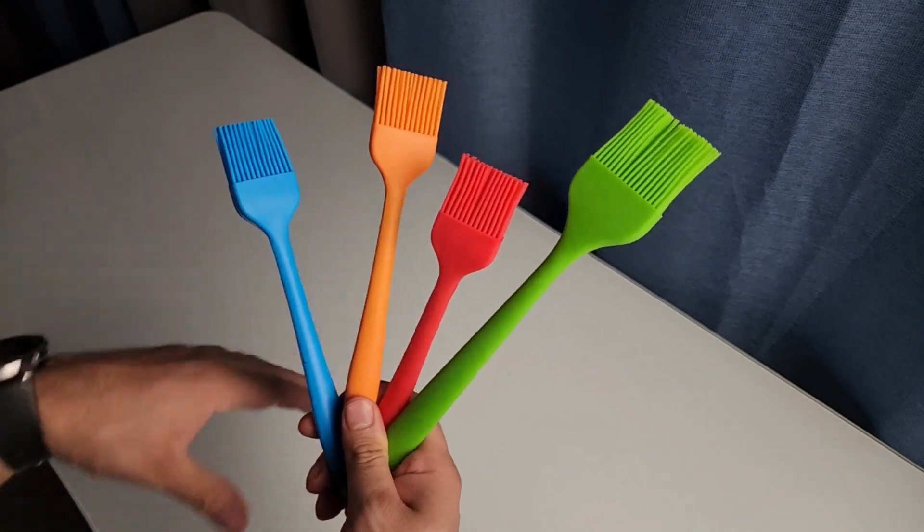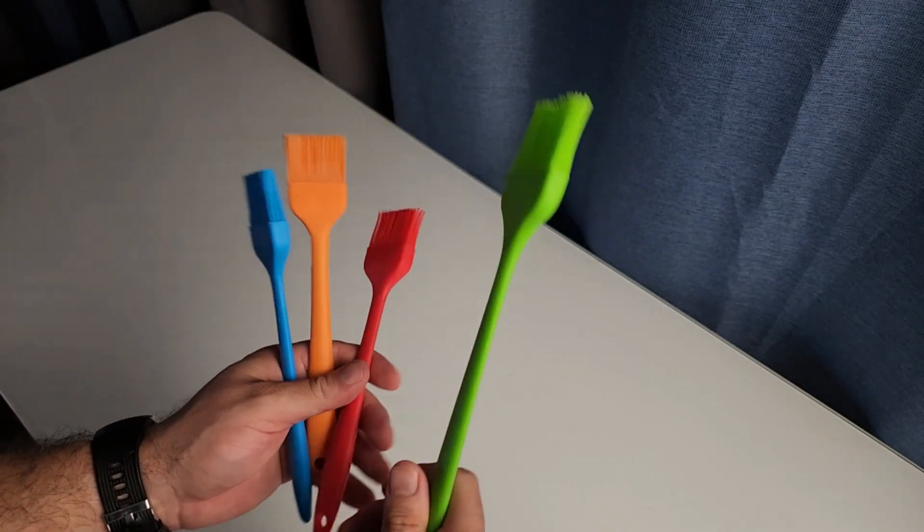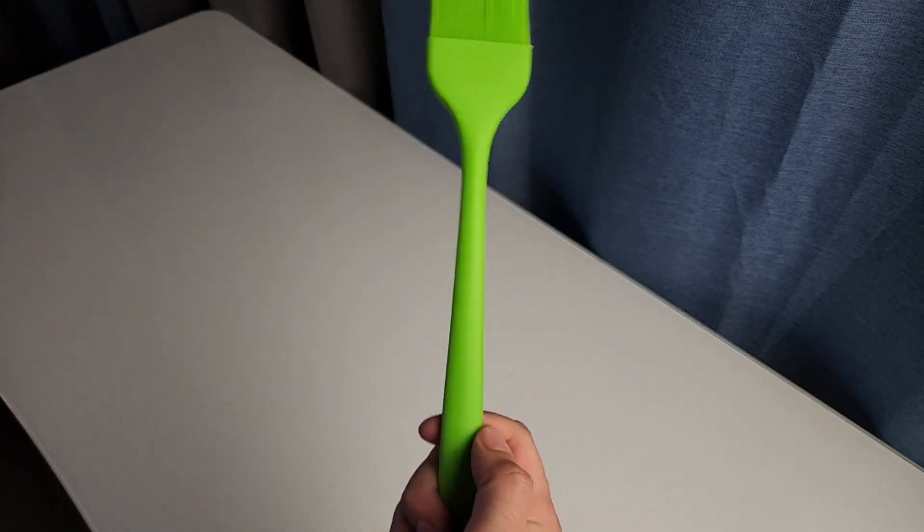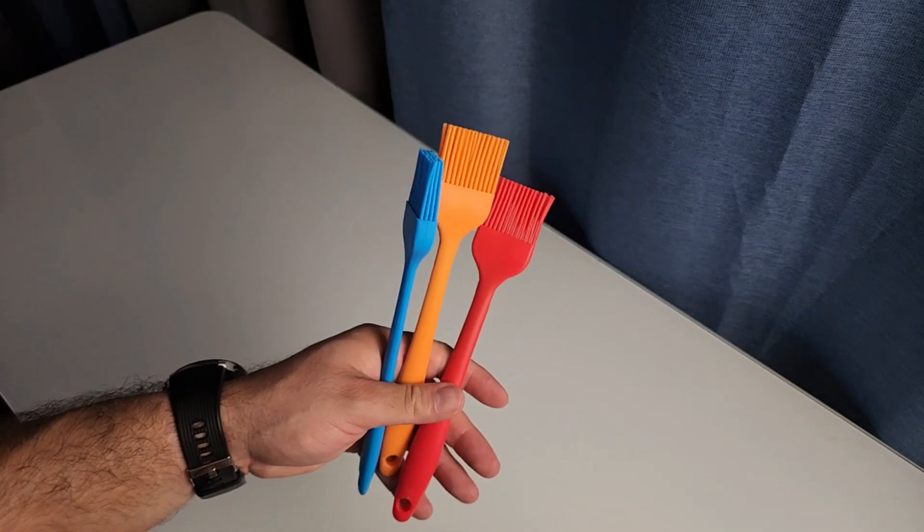Right here we're going to have four silicone grill basting brushes. We have a green one, the green one is going to be the longest one, it's about 10 inches, 10.2 inches long. And then we have three smaller ones which are going to be 8 inches long.